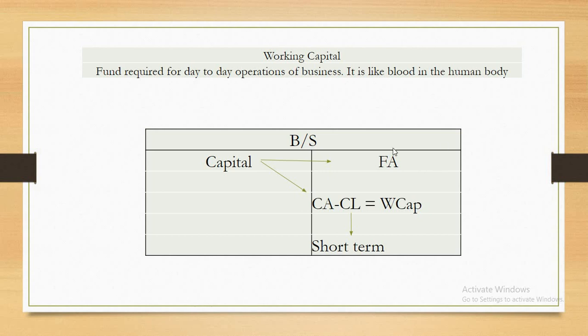Working capital fund is required for day-to-day operations and it is like blood in the human body. Just as blood is there for the human body, so is working capital for the company — to pay laborers, buy raw materials, pay electricity bills, and all sundry expenses. Getting money from sundry debtors also comes under working capital.